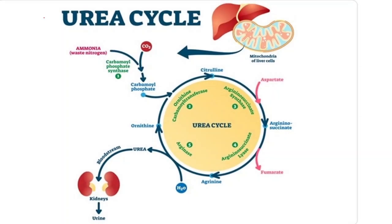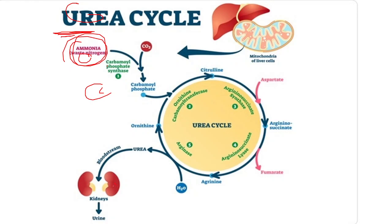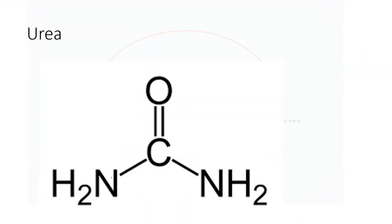As a short introduction — urea is produced in the liver by the urea cycle from ammonia metabolism, with ammonia being produced mainly from protein metabolism through the diet. From the liver it gets secreted into the blood, and through the kidney it gets excreted. This is the molecular structure of urea.